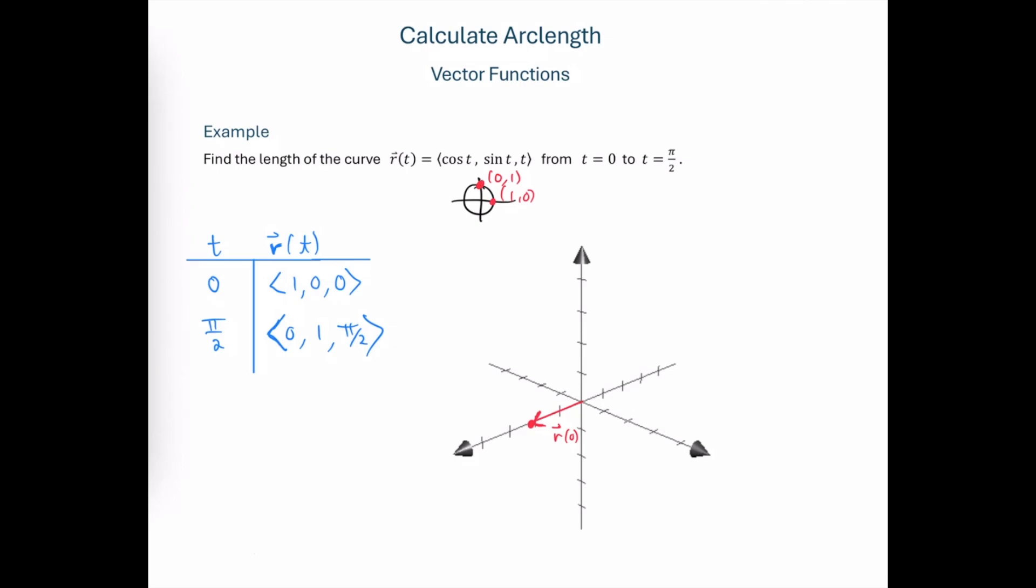This would be the output r at 0, which is a position vector terminating at 1, 0, 0, and the vector output when the parameter is π over 2 is going to be 0, 1, and then π over 2.